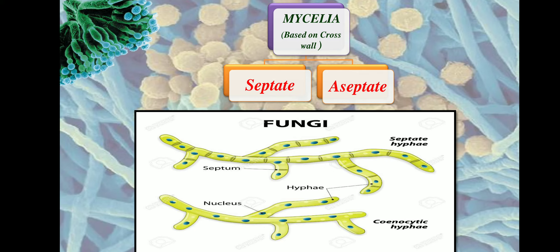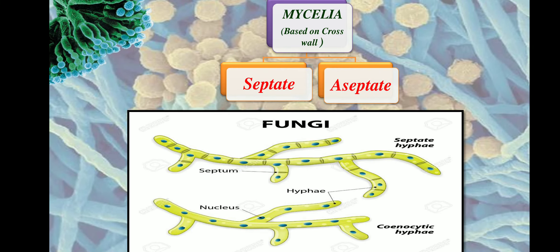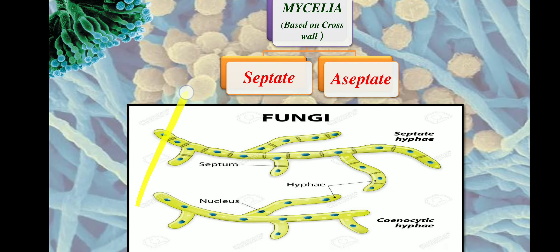In septate hyphae, the septum or cross wall divides the hyphae into different segments. The septa appear at regular intervals behind the hyphae tips — behind each tip you can see septa forming at regular intervals. The septa are transverse in nature.